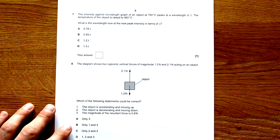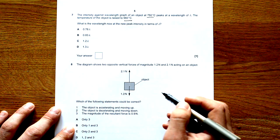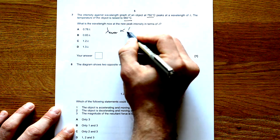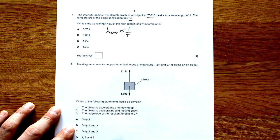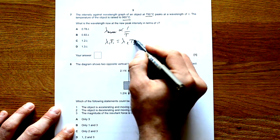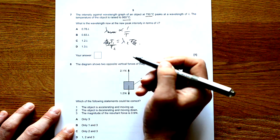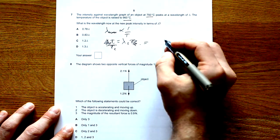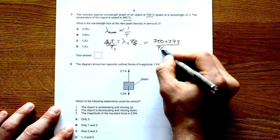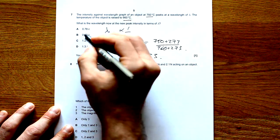Question 7: The intensity against wavelength graph of an object at 750 degrees peaks at a wavelength of lambda. Temperature is raised to 960. What is the wavelength now? We know that the peak wavelength is proportional to 1 over T, inversely proportional to temperature. So lambda 1 T1 equals lambda 2 T2. We need to turn them into Kelvin: 750 plus 273 divided by 960 plus 273. That gives us 0.83, so that's B.